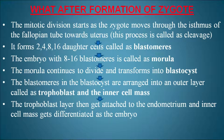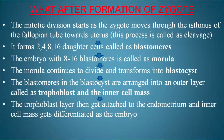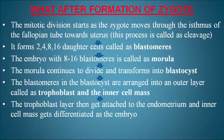After formation of the zygote, mitotic division starts as it moves through the isthmus of the fallopian tube toward the uterus — this division is called cleavage. It forms 2, 4, 8, 16 daughter cells called blastomeres. The embryo with 8 to 16 blastomeres is called the morula. The morula continues to divide and transforms into a blastocyst. In the blastocyst, blastomeres are arranged into an outer layer called the trophoblast and an inner cell mass, which helps in forming different tissues of the body.